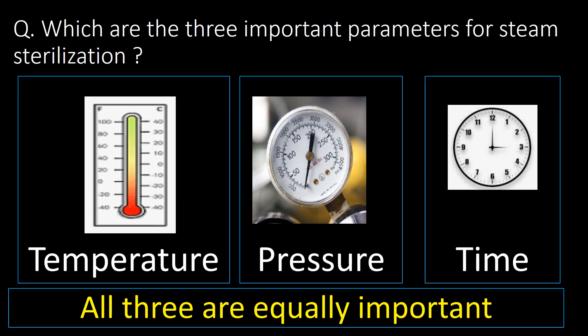Which are the three important parameters for steam sterilization? Temperature, pressure, and time are the three important parameters for steam sterilization. All three are equally important.